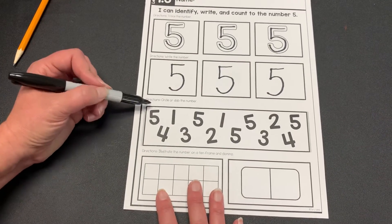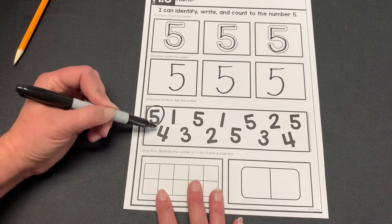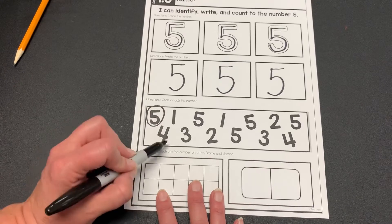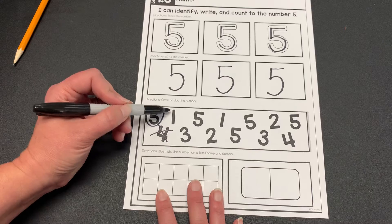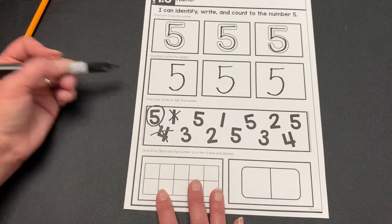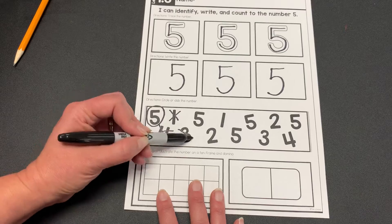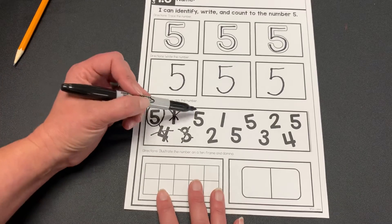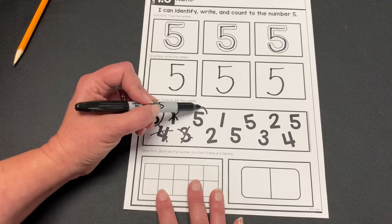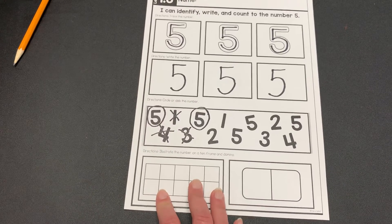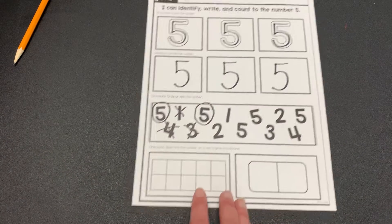Let's see. Down here I need to find all the number fives. Here's a number five. No, sir, you're not a number five. You're a number four. Get out of here four. What about you? No, you're not a number five. You're a number one. What about you? Nope, you're not a number five. You're a number three. What about you? Yes, you're a number five. I'm going to circle you. And then you're going to keep going across until you find all the number fives.